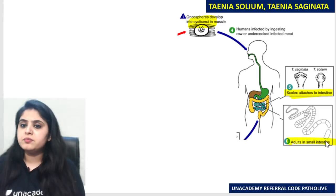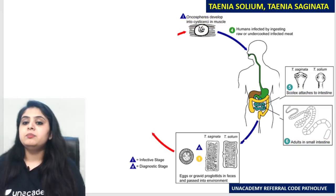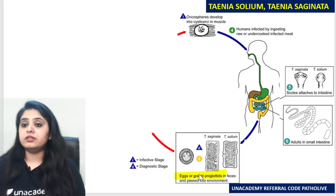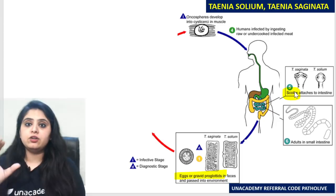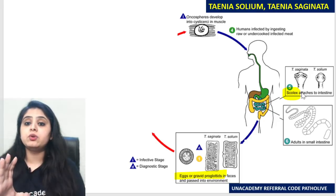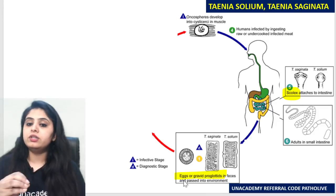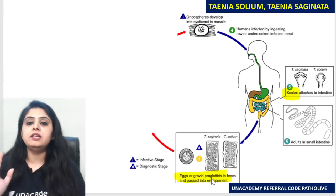If the adults have formed, eggs will be laid. Please remember — the eggs or the gravid proglottids. The scolex is the head end of the parasite, then you have a neck, then you have a proglottid. The proglottid has all the genitals — the uterus, the vagina, the ovary. The gravid proglottids or the eggs are going to be passed out into the environment.